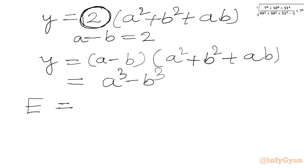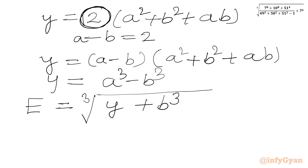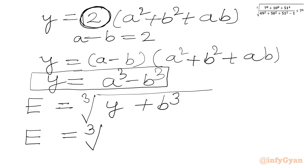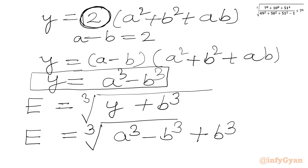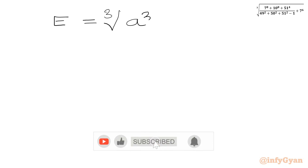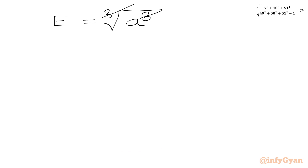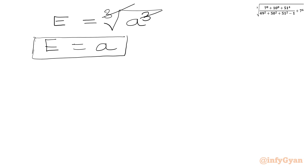Now let us write the full expression. We had cube root of Y plus B cubed. In place of Y we put A cubed minus B cubed. So expression E equals cube root of A cubed minus B cubed plus B cubed. The minus B cubed and plus B cubed cancel, leaving E equal to cube root of A cubed. The cube root and cube cancel, so E equals A. Since A was our substitution for 51, our answer is 51.